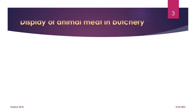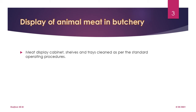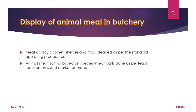Next, we look into how animal meat should be displayed once it has reached the butchery. The meat display cabinet, shelves, and trays should be cleaned as per standard operating procedures — this is very important because you are dealing with food for human consumption. Animal meat sorting should be based on species or meat parts as market demand requires. People usually sort animal meat into steaks, ribs, and so on, depending on market demand.